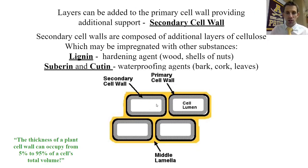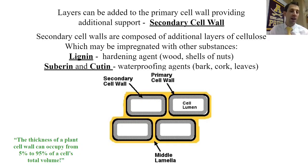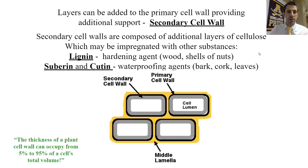Some plant cells also have a secondary cell wall, shown as the gray area inside the primary cell wall. Every cell has a primary cell wall; some additionally have a secondary cell wall, which provides extra functionality. One thing found inside secondary cell walls is lignin, a hardening agent found in cells that make up wood or the shells of nuts.